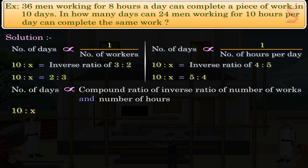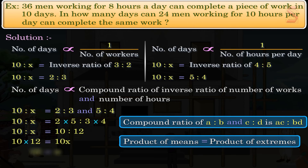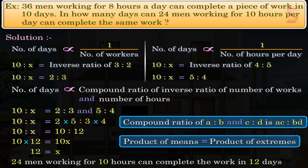So, we have 10 is to x equal to the compound ratio of 2 is to 3 and 5 is to 4. Simplifying, we find that 24 men working for 10 hours can complete the work in 12 days.